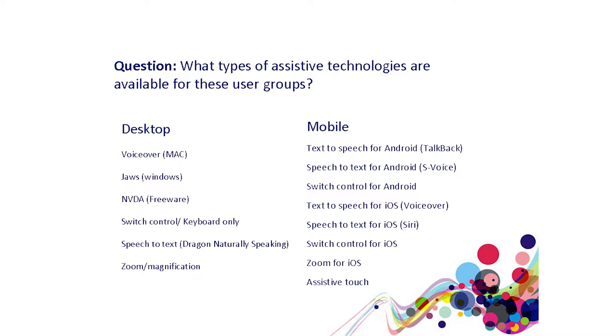On desktop, you've got VoiceOver on the Mac, JAWS for Windows, and NVDA — these are screen reading software. There's also switch control or keyboard-only access for those who can't use a mouse. Switch control is used by people like Stephen Hawking, who has a switch embedded in his cheekbone to control software and generate speech. Speech-to-text — Dragon NaturallySpeaking — is the most popular, and zoom or magnification software can magnify the screen up to 64 times.